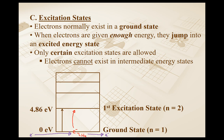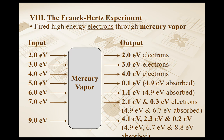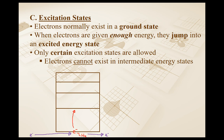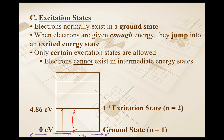The first excitation state is associated with an energy of 4.86 electron volts. That's why nothing happened when we fired electrons with 2, 3, or 4 electron volts of kinetic energy — they don't have enough energy to reach the first excitation state. You can't go part of the way up and come down; they either go to the state or they don't. There's no in-between — they can't exist between the energy states.